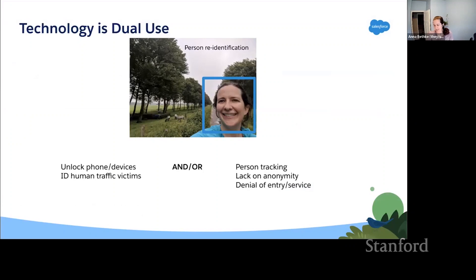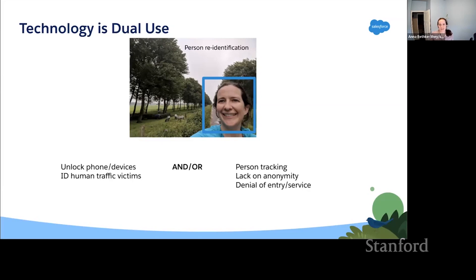One of the biggest issues is that technology is dual use. Image labeling can have large ethical issues. You might ask, 'Should we just not do image categorization at all?' Person re-identification is a great example — it's super helpful to unlock your phone, and it's been used to ID human trafficking victims, but it can also be used for person tracking, lead to a lack of anonymity, or a denial of service for different individuals.